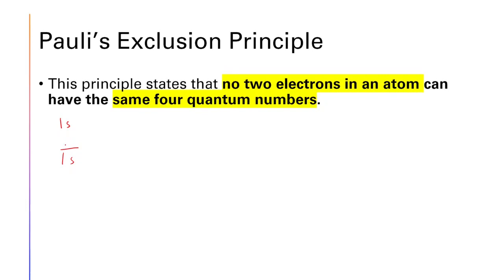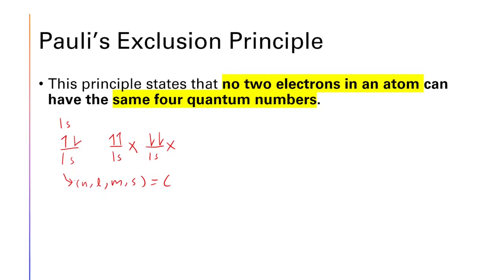For the 1s orbital, there is one orientation that can fit two electrons. If one electron is spin-up, the other must be spin-down. Using quantum numbers n, l, m, s: for 1s, n=1, l=0, m=0, so one electron is (1,0,0,+½) and the other is (1,0,0,−½). If both electrons had the same four quantum numbers, that would violate the Pauli exclusion principle.